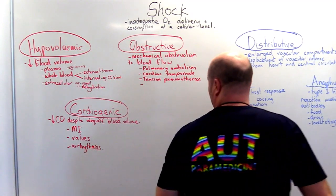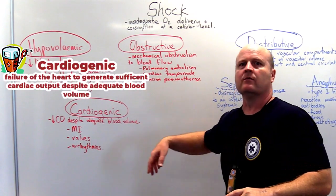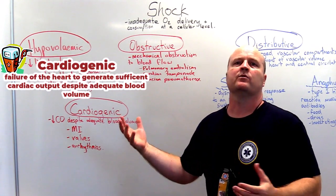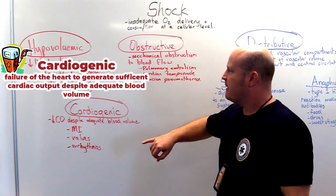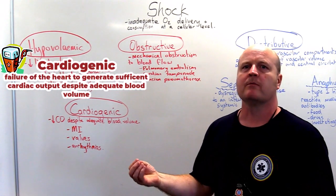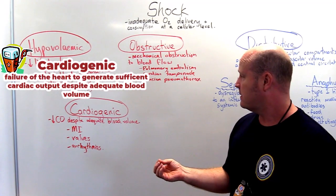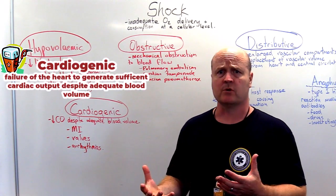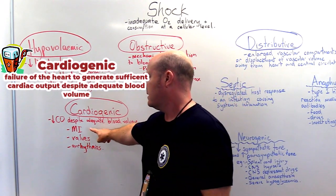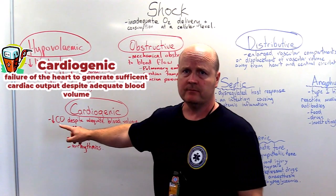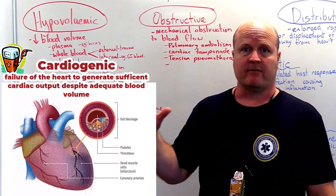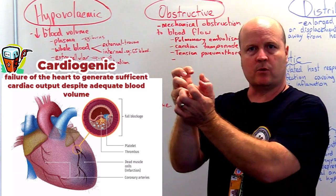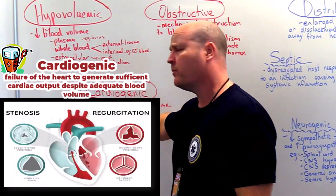The next one we have is cardiogenic. Cardi — heart; genic — like Genesis, creation. So with cardiogenic shock, this is a problem caused because the heart isn't doing its job properly — decreased cardiac output despite adequate blood volume. What's wrong with the heart? It could be myocardial infarction. Dead meat, don't beat — if part of our heart myocardium dies, then we've got less squeeze to get blood out of the heart.